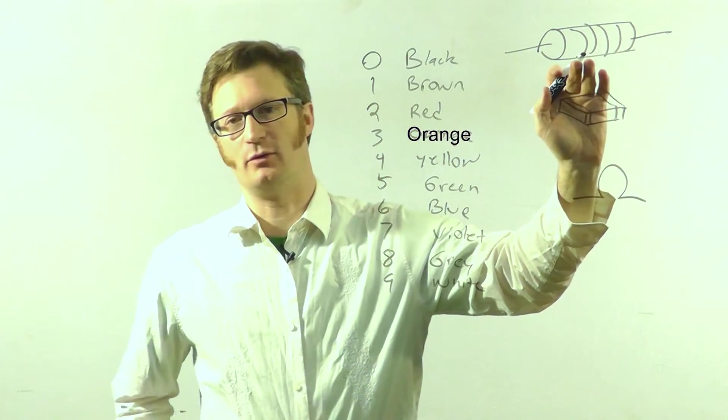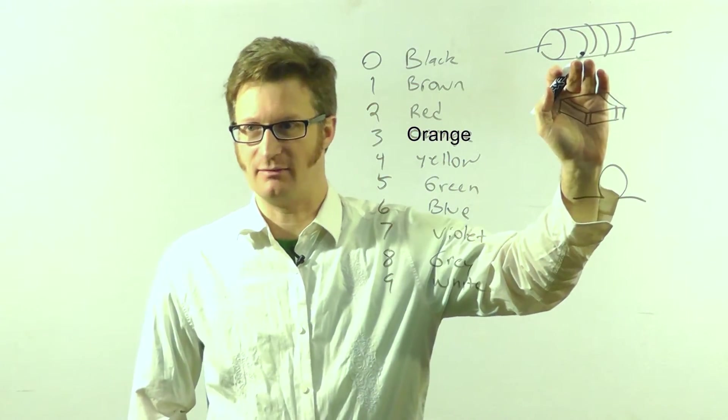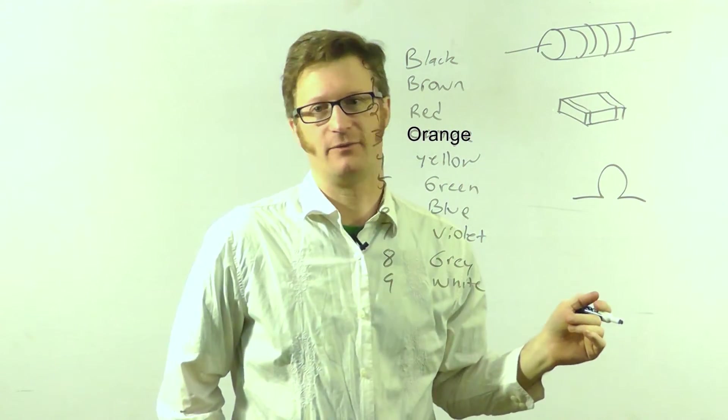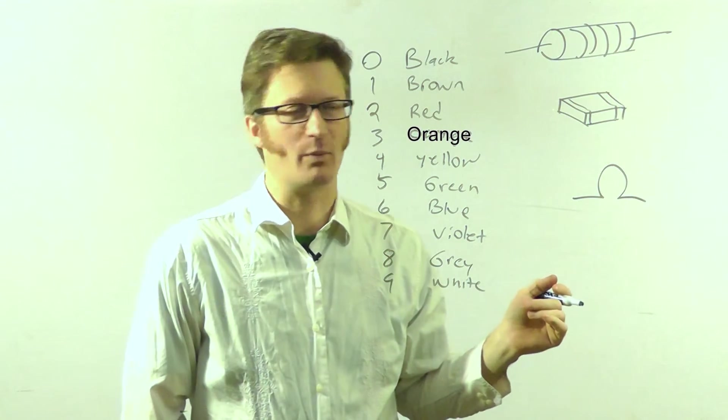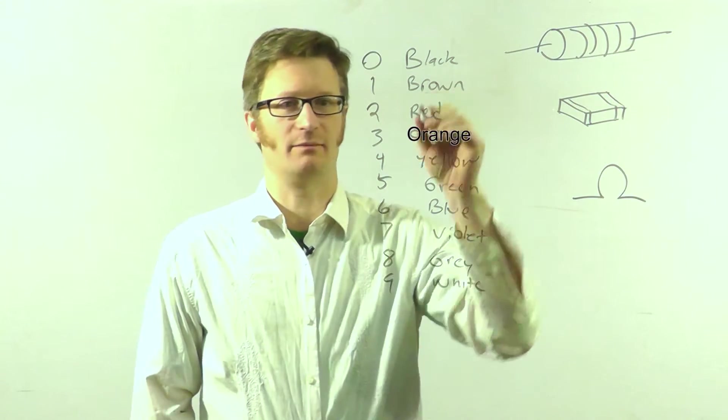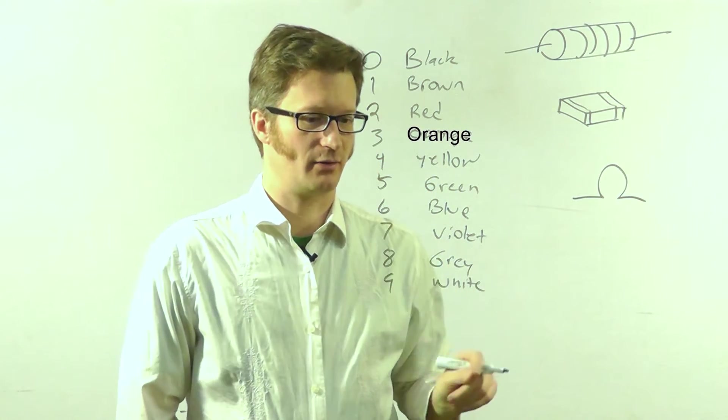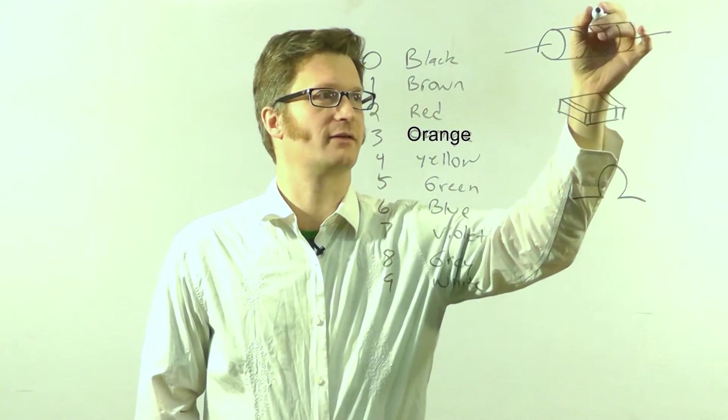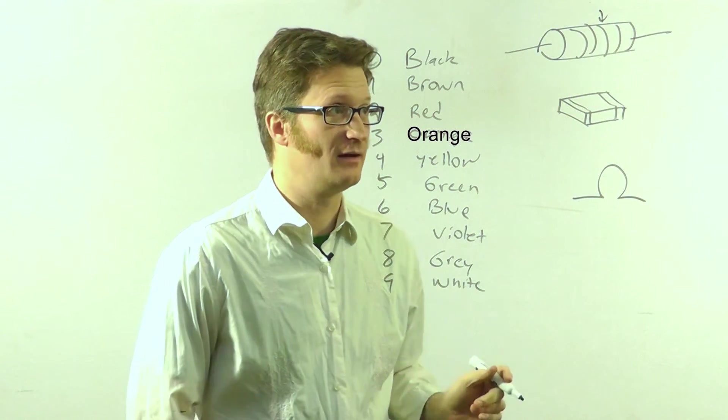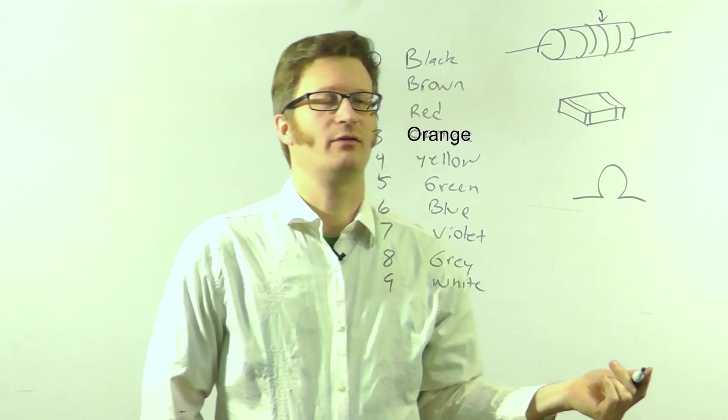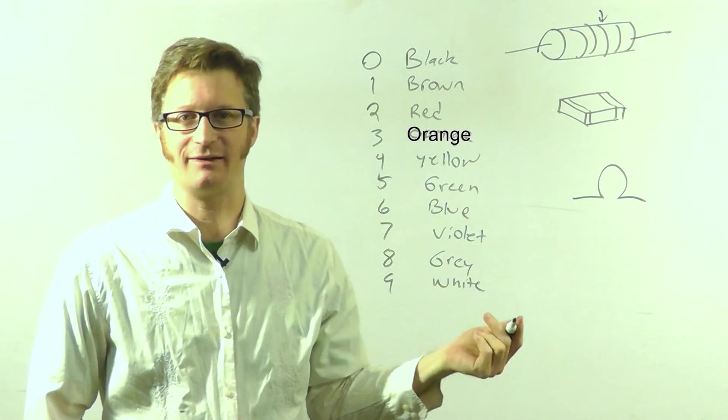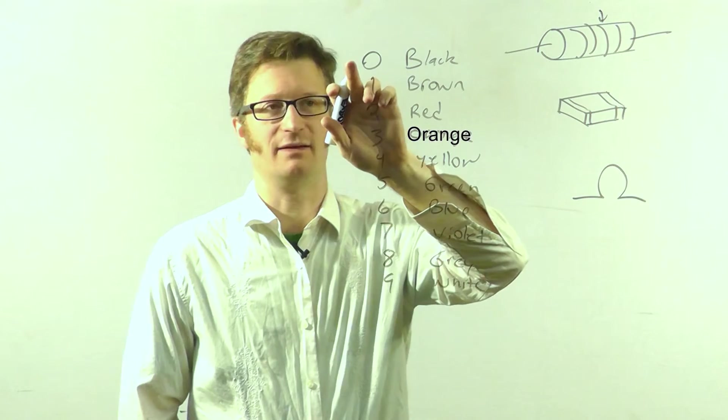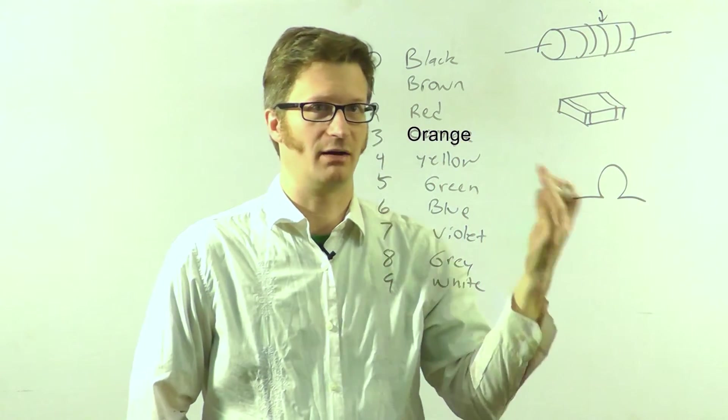So the first two bands will tell you the major values of the resistor. If I have a 47 ohm resistor, that will be yellow, violet, and then the third number will tell you how many trailing zeroes there are. So in this case it would be zero trailing zero, so it would be black.